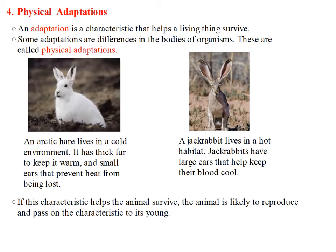In the picture on the right, we can see a jackrabbit. A jackrabbit lives in a hot habitat, so this animal has large ears that help keep their blood cool. All of these are physical adaptations — adaptations related to a body part — and these adaptations help the animal survive in its environment.